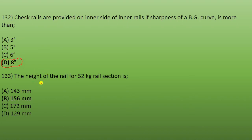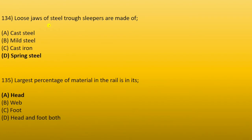The height of the 52 kg rail section is 156 mm. The base of the foot of the 52 kg rail section is also 156 mm from subgrade. Next: the loose jaws of steel trough sleepers are made of spring steel. These loose jaws are part of the steel sleeper and are made of spring steel.